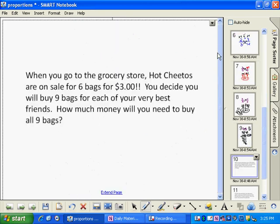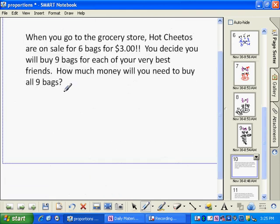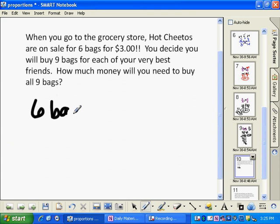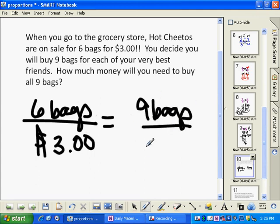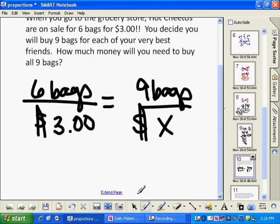Now, the way that we transfer this is if we're doing word problems. So if I gave you a problem like this, it says when you go to the grocery store, hot Cheetos are on sale, 6 bags cost $3. You decide you will buy 9 bags for each of your very best friends. How much money will you need to buy all 9 bags? I took this information and I set it up in a proportion. Notice I'm consistent. Bags over dollars equals bags over dollars. You could have put dollars over bags equals dollars over bags, and that would have worked out just fine. You just have to be consistent with however you set it up.